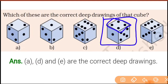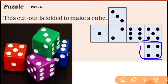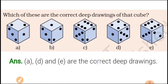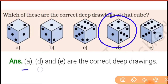Number D: top pe four hai. Dice ko aise rakhein ki top pe four ho. Left mein one aana chahiye, right mein five aana chahiye. Jab fold karein ge toh left mein one aur right mein five aayengi — aur yahan wahi dikh raha hai. So drawing D is a correct deep drawing.